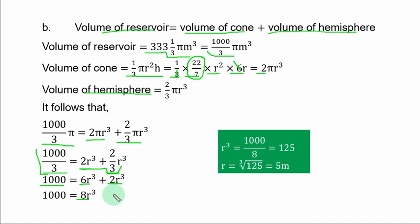To get r³ first, divide both sides by 8. You have r³ equal to 1000/8 and that is 125. To get r, you take the cube root of both sides. So you have r equal to cube root of 125, and that is 5 meters. That is the value of the radius.